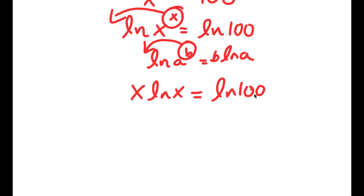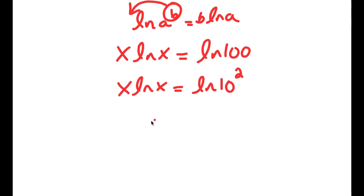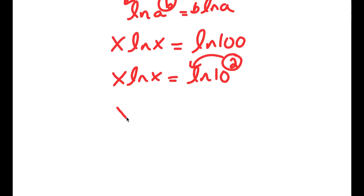Now, ln 100 is the same thing as ln of 10 squared. So I get x times ln x is equal to ln 10 squared. And if I have something in the form ln a to the power of b, I can move 2 to the front. So I get x times ln x is equal to 2 times ln 10.